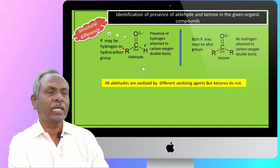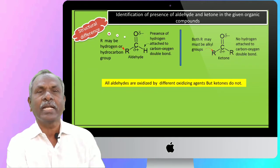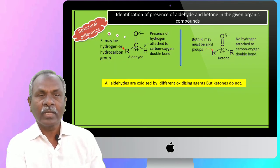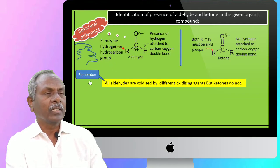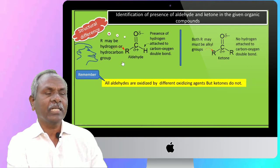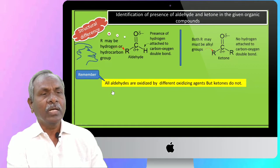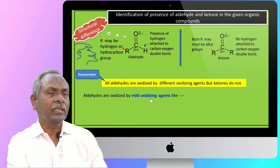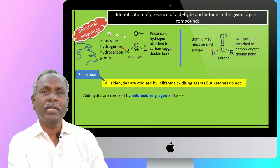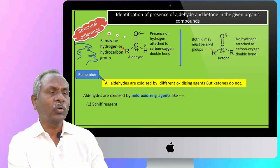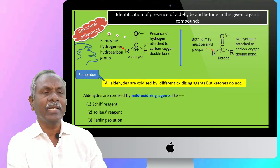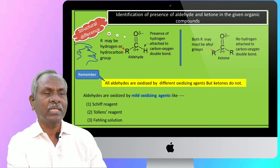All aldehydes are oxidized by different oxidizing agents, but ketones do not. All aldehydes are oxidized by even mild oxidizing agents. The mild oxidizing agents will not cause oxidation of the ketone group. These mild reagents include Schiff's reagent, Tollens' reagent, and Fehling's solution.